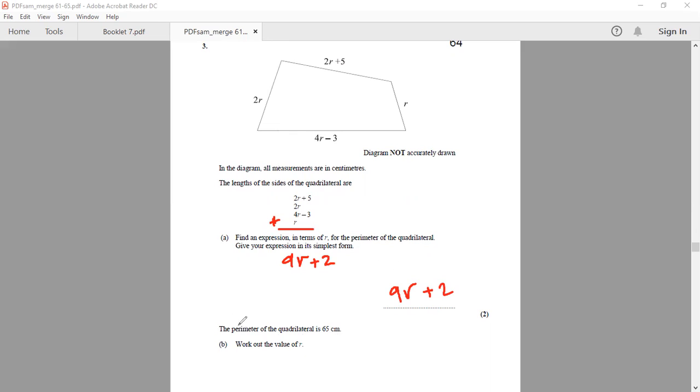Moving to the second part of the question. It says, the perimeter of the quadrilateral is 65 centimeters, work out the value of R.